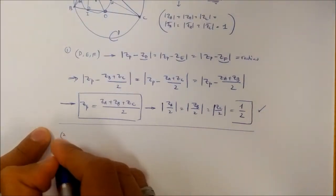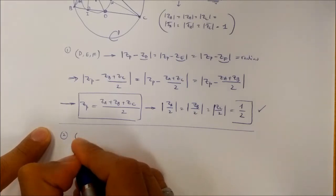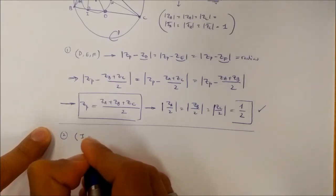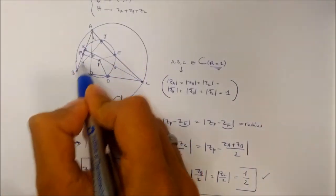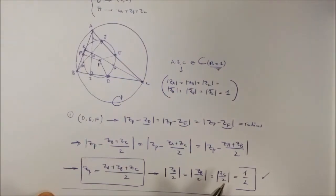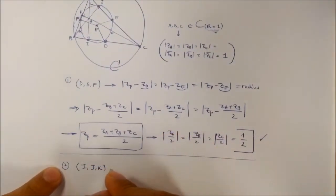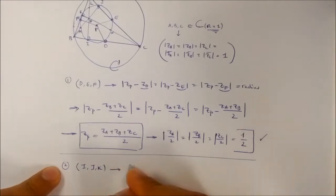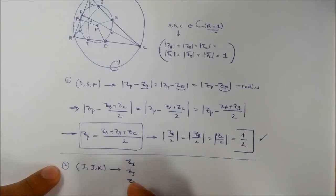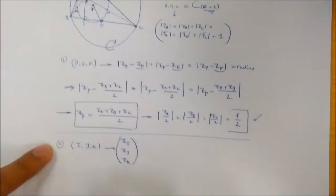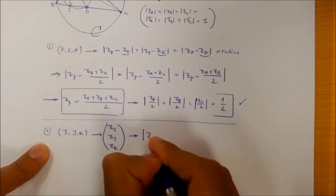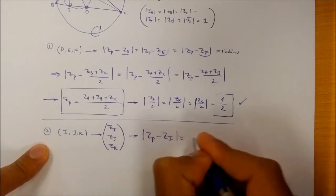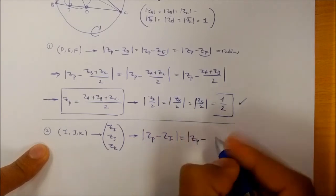Now I'll consider the second group of points I, J, and K, which are the feet of the altitudes of triangle ABC. I have already calculated the complex coordinates corresponding to ZI, ZJ, and ZK, and I need to prove that |ZP − ZI| = |ZP − ZJ| = |ZP − ZK|.